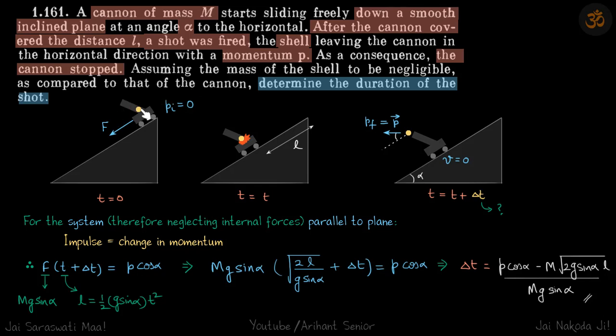We are given a cannon and shell which start from rest at the top of an inclined plane. After some time, the cannon slides down a distance L, and at that moment the shell is fired. The shell comes out with momentum p vector horizontally, and the cannon comes to rest. This is the information given. We need to determine the duration of the shot.